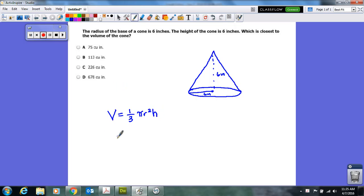So given the information they provided in this question, we're going to find one third of pi times r squared. Well, they told us the radius was six, so I'm going to square six times the height.